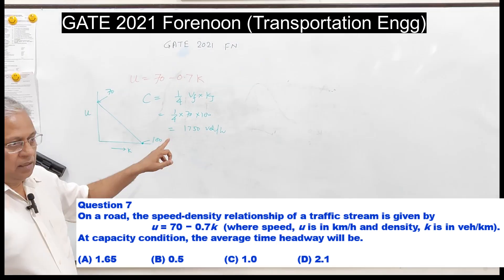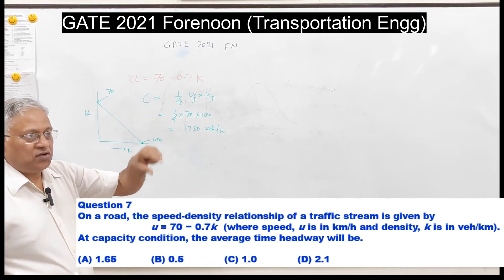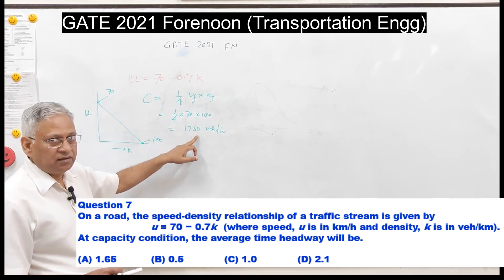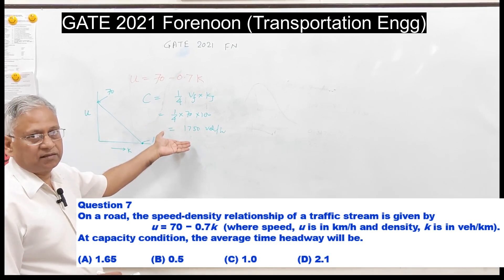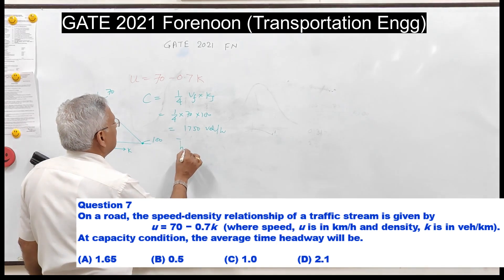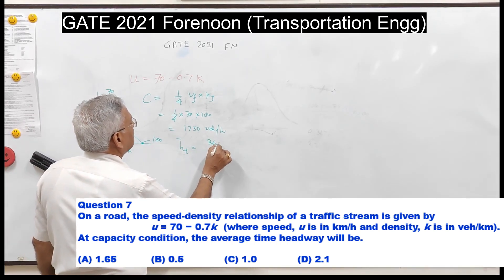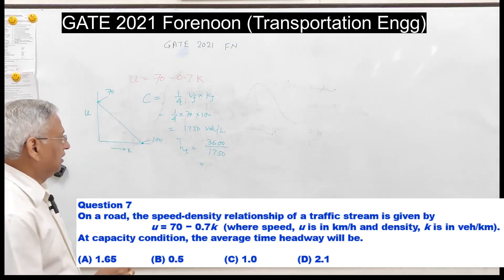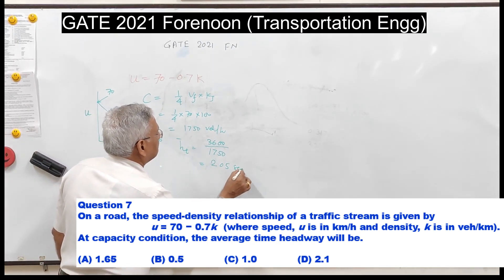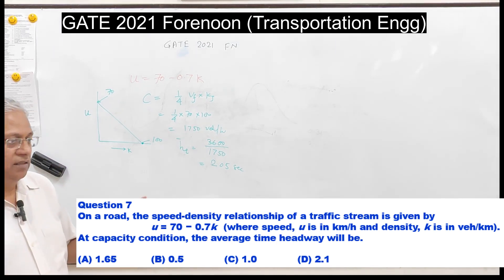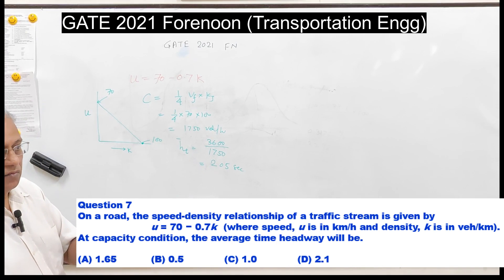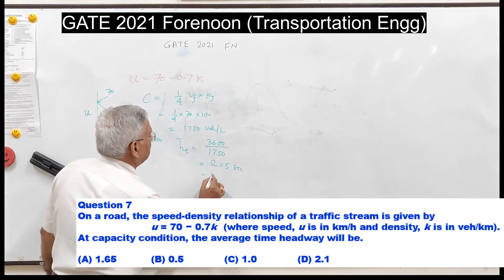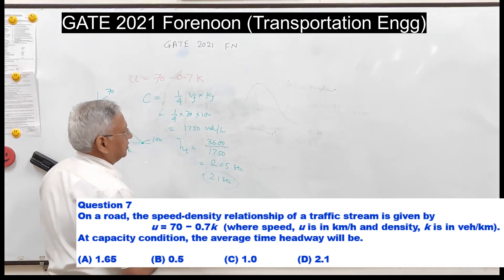At capacity of 1750 veh/h, average time headway = inverse of flow = 3600 / 1750 = 2.057 seconds ≈ 2.1 seconds. Among the given options (1.65, 0.5, 1.0, 2.1), the closest and correct answer is D — 2.1 seconds.